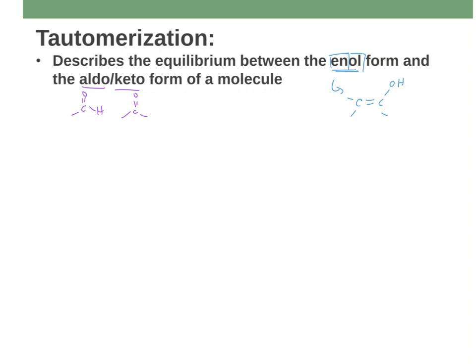Now, the big punchline here is that enols are generally not very stable. So enols, generally speaking, are not stable. They automatically turn into their carbonyl form, that aldo or keto form, about like 90 something percent of all of them that you're going to see, not stable. And so why are they not stable, what's going on here?